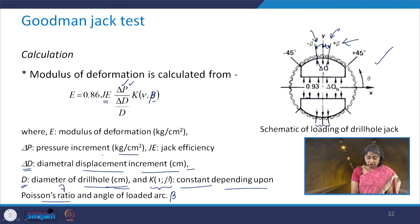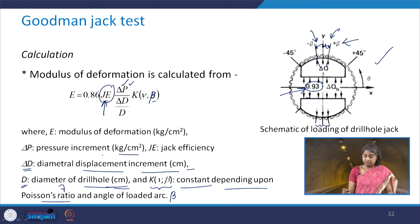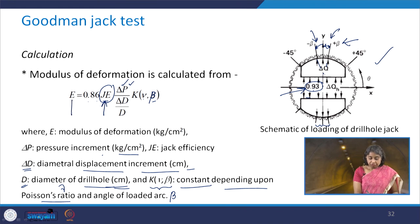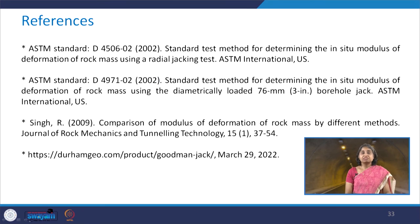Based on the type of piston used, the jack efficiency can be either 93% or 55%. In the formula shown, it is 93%, hence it is multiplied by 0.93. This is how the calculation for the modulus of deformation can be done using the Goodman Jack test.